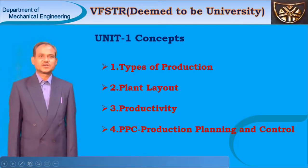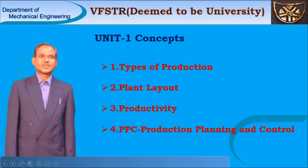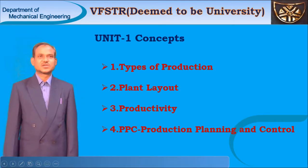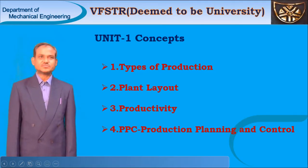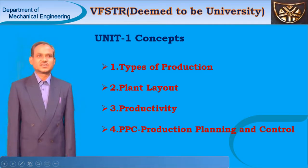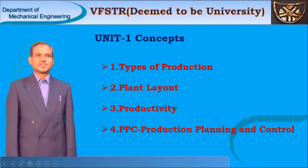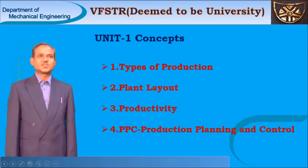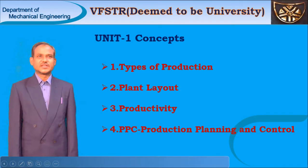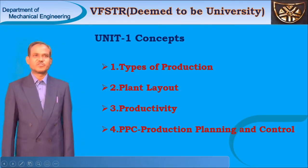In the first unit, there are four important concepts. First one is the types of production or manufacturing methods. Second concept is the plant levels. Third one is productivity, and fourth one is production planning and control. These are the four concepts in Unit 1.